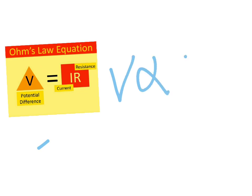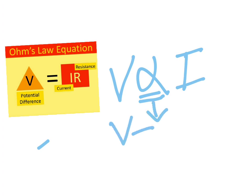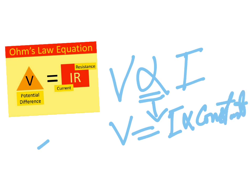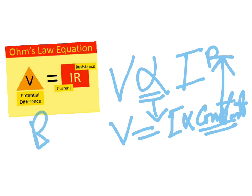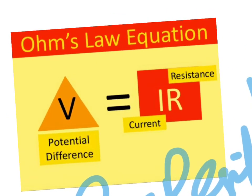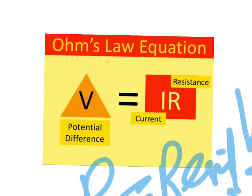Ohm's law states that voltage is directly proportional to the current. When the proportionality sign is replaced by an equality sign, we must apply a constant. So voltage equals current multiplied by a constant, and this constant is called R — the resistance of the conductor. In Ohm's law, this constant is resistance, shown as R, giving us V = IR.